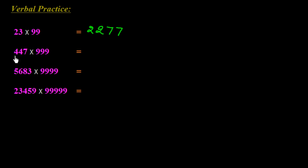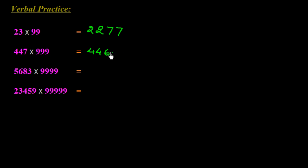Next, multiply 447 with 999. One less than 447 is 446, which goes on the left side. Subtract 446 from 999: we get 553. So the answer for 447 × 999 is 446553.